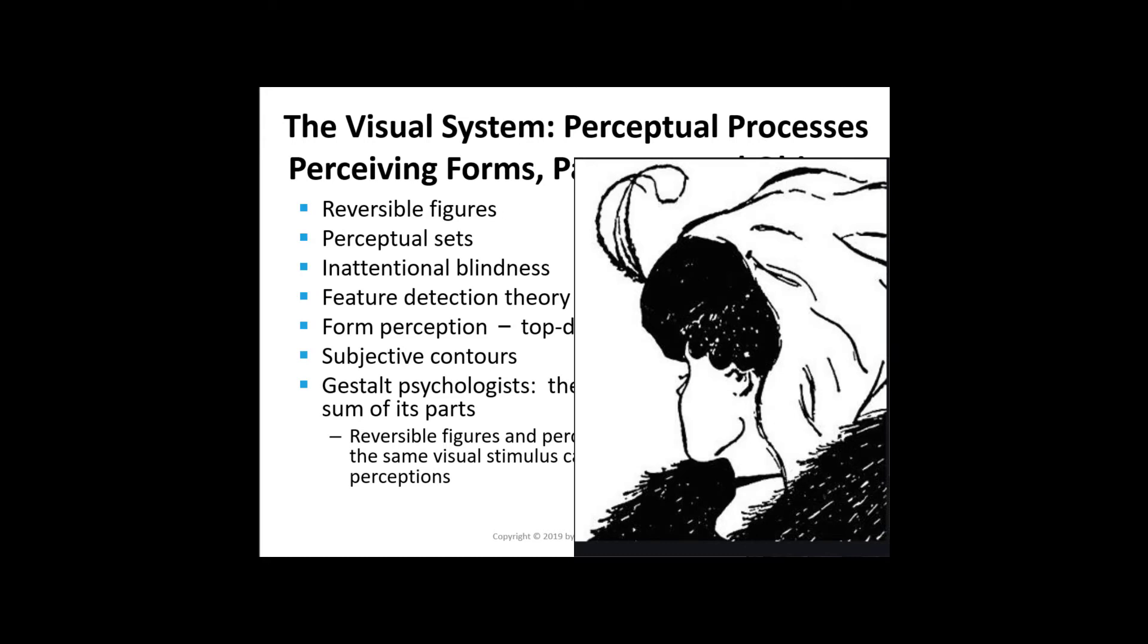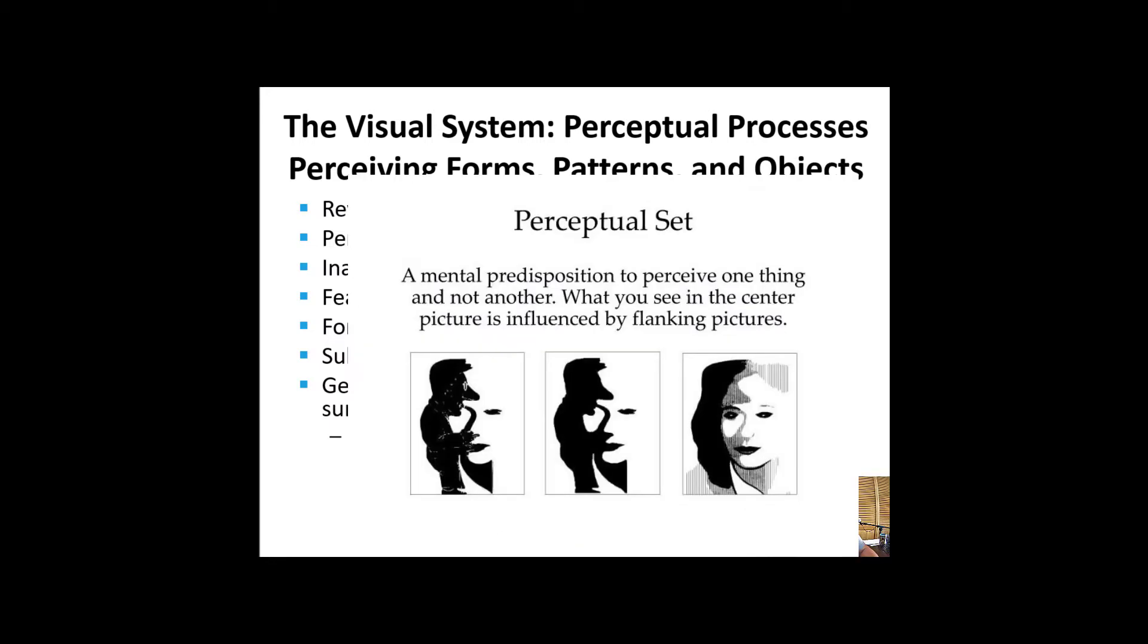A reversible figure is a drawing that is compatible with two interpretations that can shift back and forth. A perceptual set is a readiness to perceive a stimulus in a particular way.